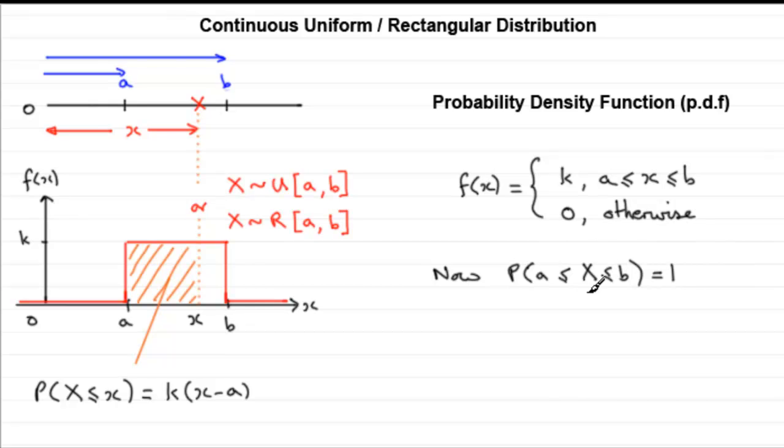So this probability is given by the area contained in the whole rectangle here. And the area of the whole rectangle is going to be k, that length there, multiplied by this length, which is B minus A. We know that therefore k multiplied by B minus A must equal one. And if we divide both sides by B minus A, you get that the constant k is going to be one divided by B minus A.